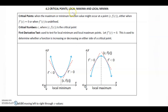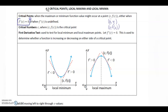4.2: critical points — local max and local min. Critical points are where the maximum or minimum function value might occur. That's at the point (c, f(c)), or in other words, (x, y) or (x, f(x)), however you want to write that. This occurs either when f'(c) equals 0 or when f'(c) is undefined. These are the two situations where we get a critical point.